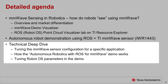Topics include the steps involved in tuning the millimeter wave sensor configuration for a specific application, a description of the main components of the Autonomous Robotics with ROS for millimeter wave demo to understand how it works internally, and finally a list of the most important tunable Robot OS navigation stack parameters that can be used to adjust the behavior of the robot.